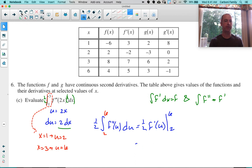Don't forget there's a 1 half in front of that. So that's going to be 1 half times F prime of 6 minus F prime of 2. We can get those values off the table. F prime of 6 is 5, F prime of 2 is negative 2. So that will be 1 half of 7, which is 7 halves.